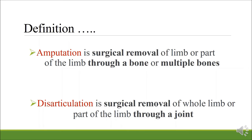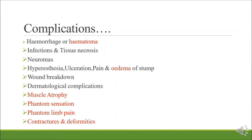Let's see the post-surgical complications that can frequently be seen: hemorrhage and hematoma, infection and tissue necrosis, neuromas, hyperesthesia, ulceration, pain and edema of the stump, wound breakdown, dermatological complications, muscle atrophy, phantom sensation, phantom limb pain, contractures and deformities. The highlighted terms are the areas which physiotherapists address in their pre-prosthetic management. Physiotherapists play the main role in guiding the amputated person back to a fully normal lifestyle.